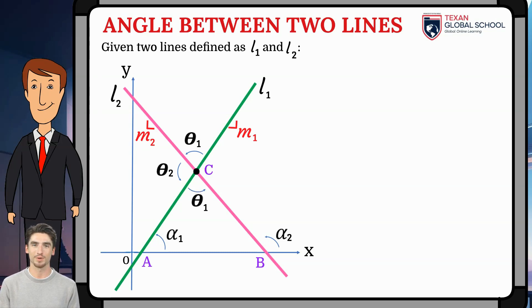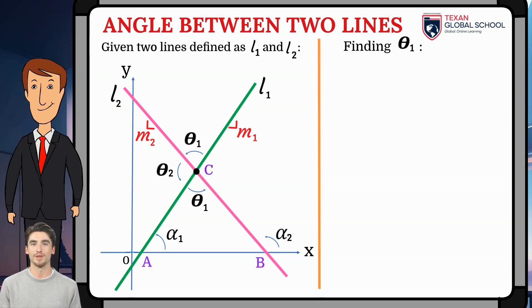By definition, the exterior angle of a triangle is equal to the sum of its opposite interior angles. So alpha2 equals alpha1 plus theta1. Therefore, the angle between two lines theta1 is the difference between alpha2 and alpha1.